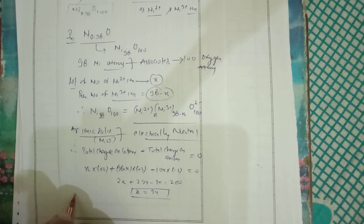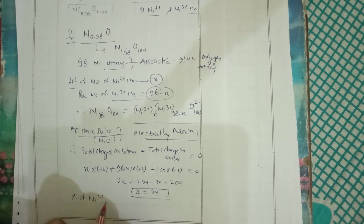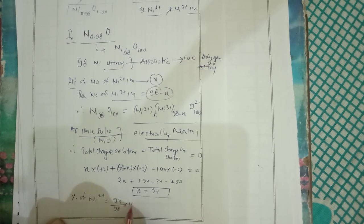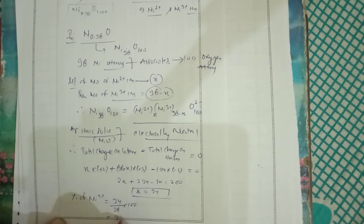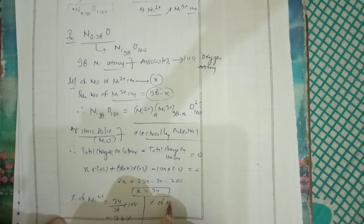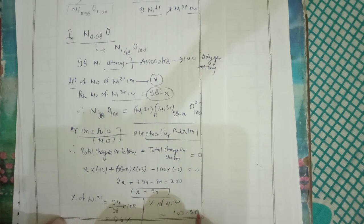Then we can have the percentage of Ni²⁺ ion, that is 94 upon 98 multiplied with 100, that will be 96%. And percentage of Ni³⁺, that will be 100 minus 96, it will be 4%.